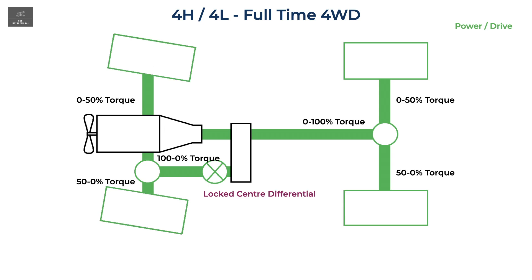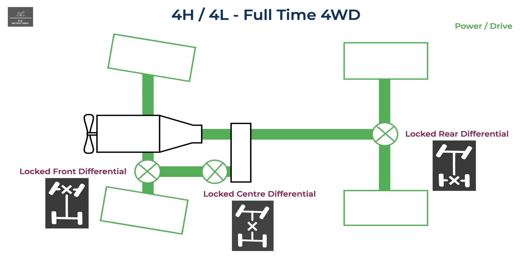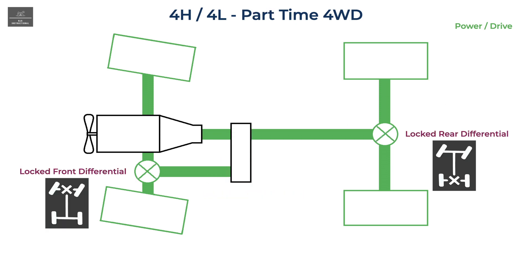A full-time four-wheel drive with the center differential locked acts the same way as a part-time four-wheel drive in either 4-high or 4-low in terms of torque and power split. A vehicle in 4-low will also have torque multiplication due to the lower gearing used in the transfer case; however, the principles of torque and power split still remain the same. Therefore, a triple-locked full-time four-wheel drive or a twin-locked part-time four-wheel drive will give you true four-wheel drive in terms of torque and power transmission, even in non-ideal conditions.